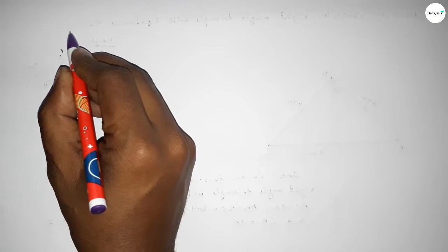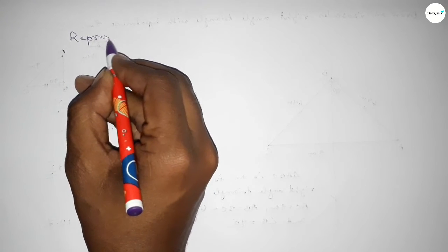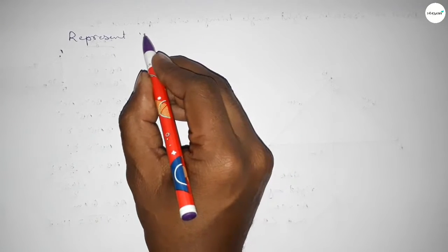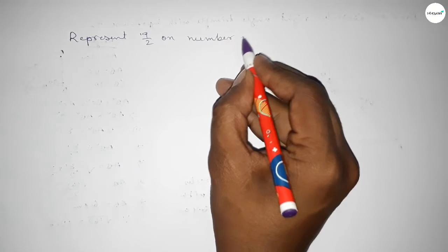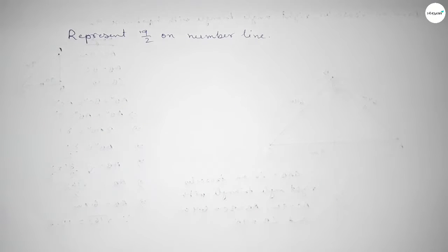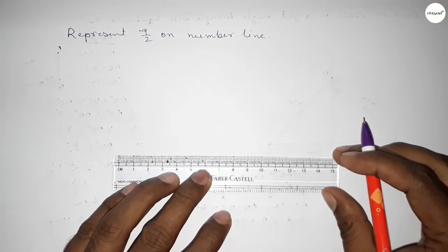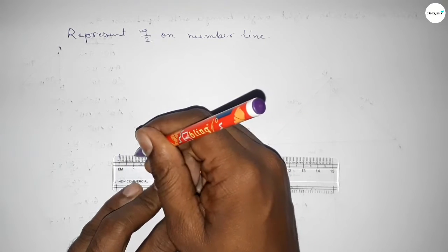Hi everyone, welcome to SI Share Classes. Today in this video, we have to represent 9 over 2 on a number line. So let's start the video. First of all, we have to draw here the number line, so first drawing here a line of any length.